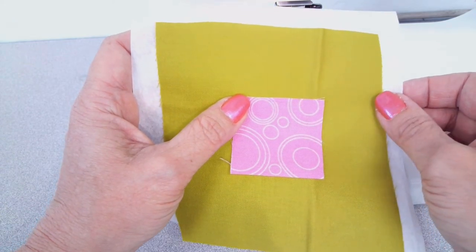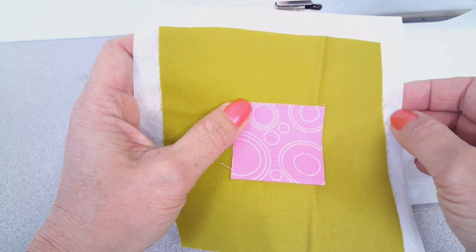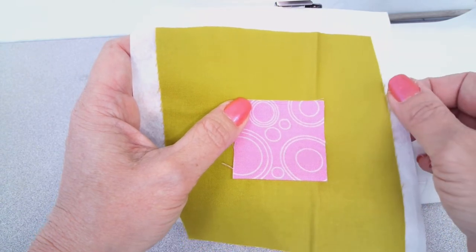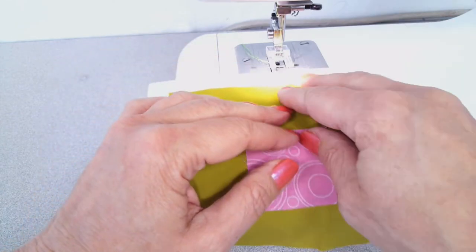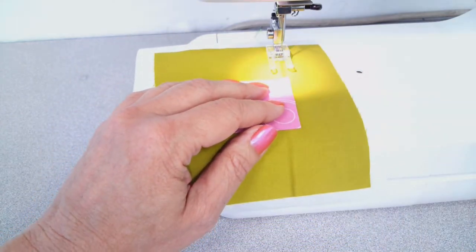So we want to put a stabilizer on the back. I like this one because it's very crispy feeling and it tears away nice and clean when we're finished, so it's easy to remove from your sewing.